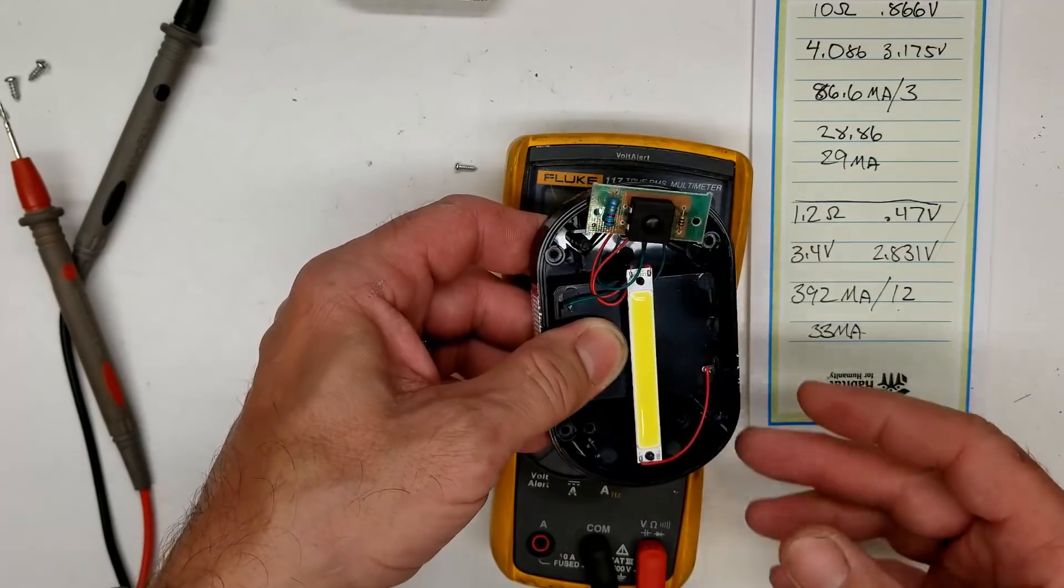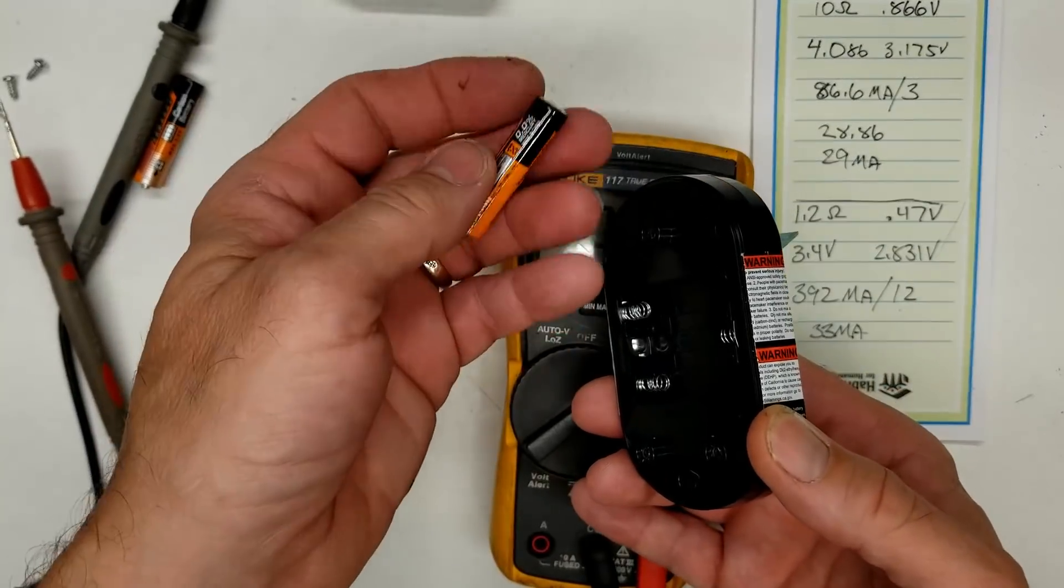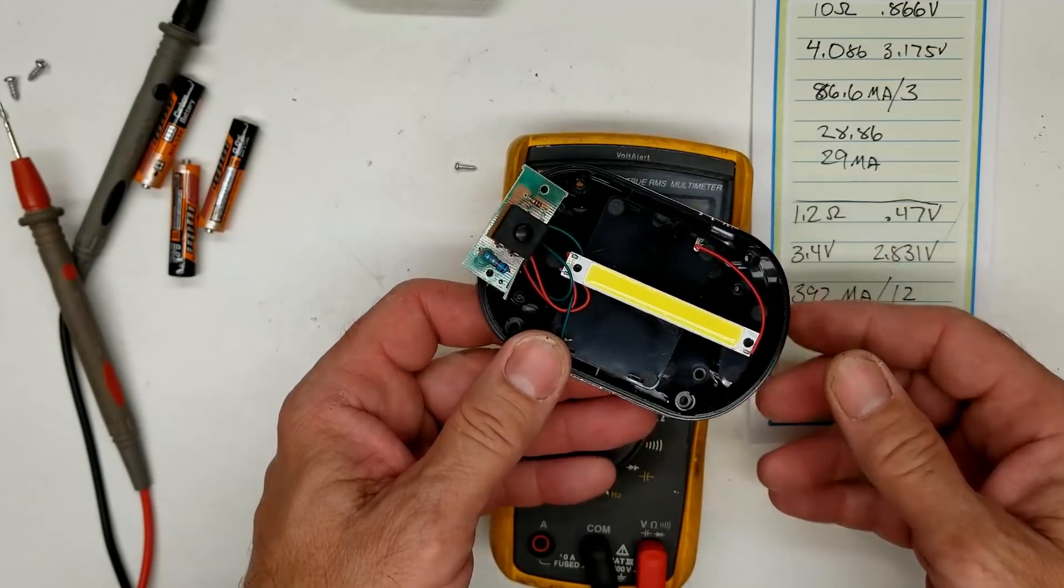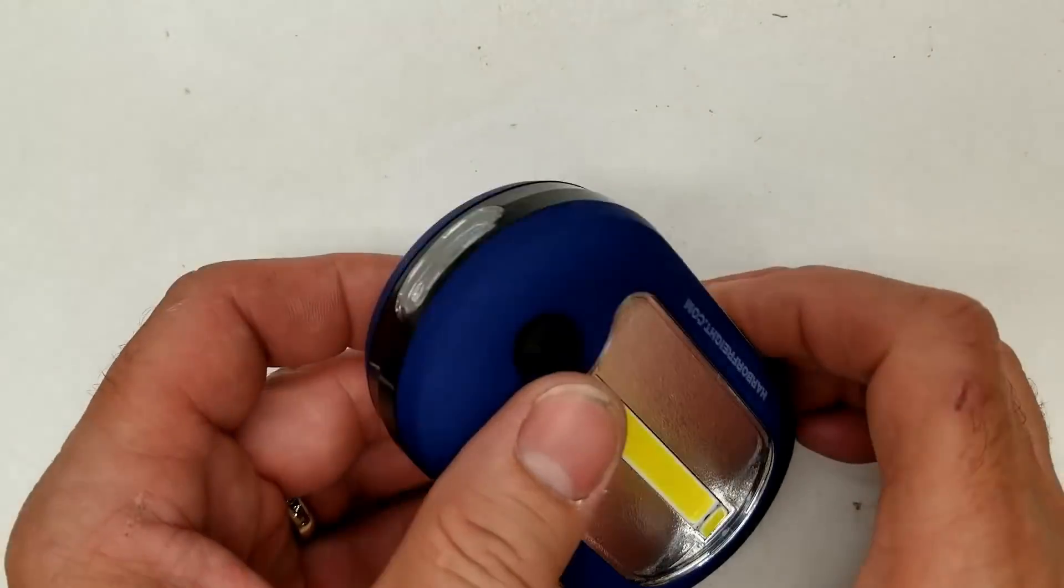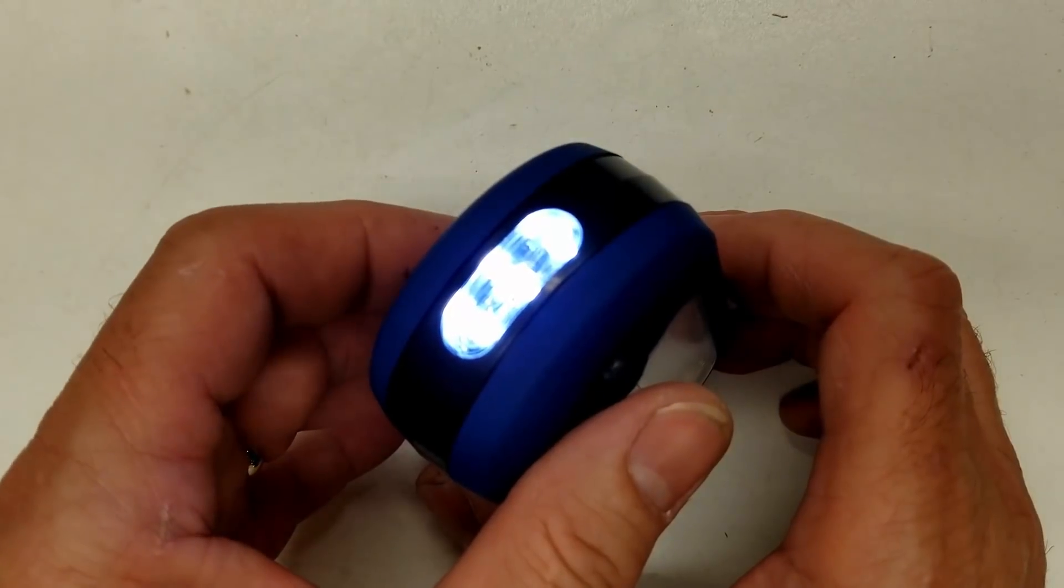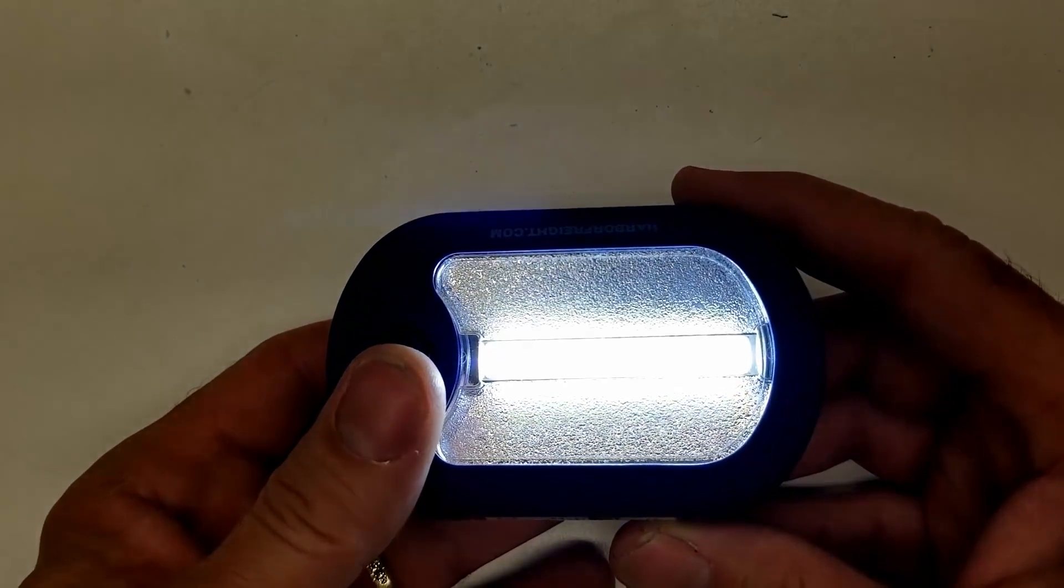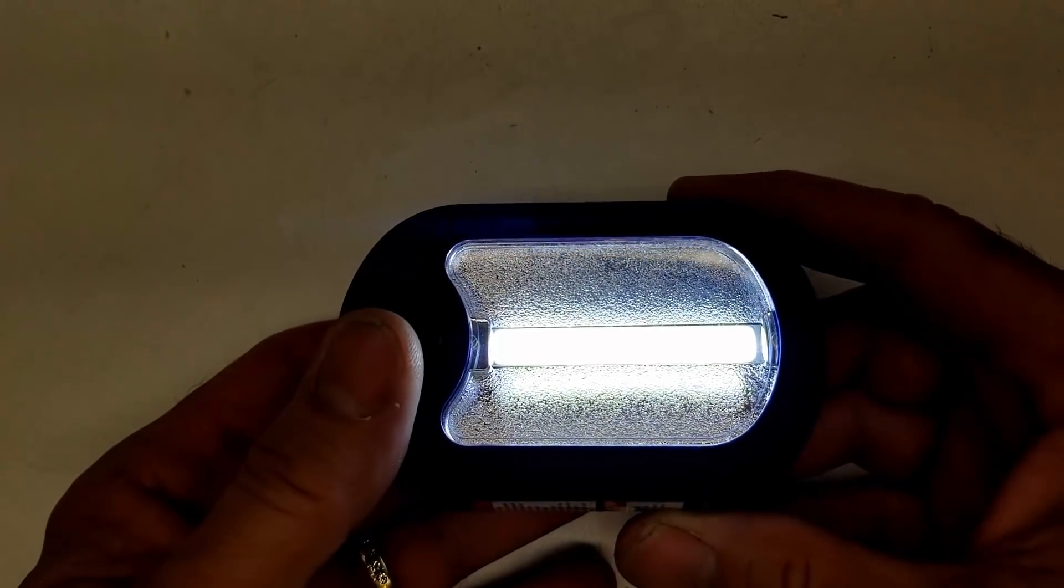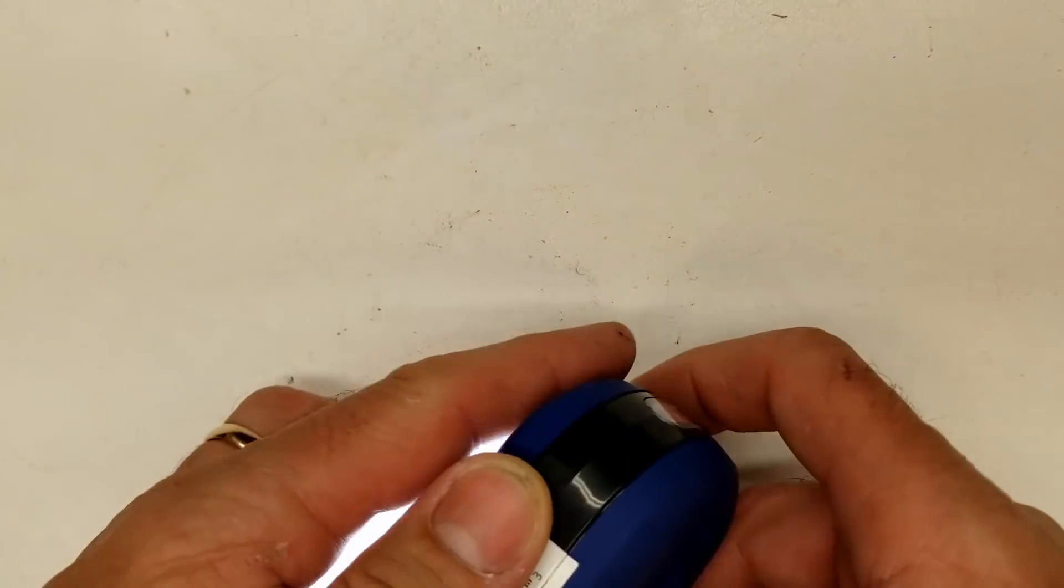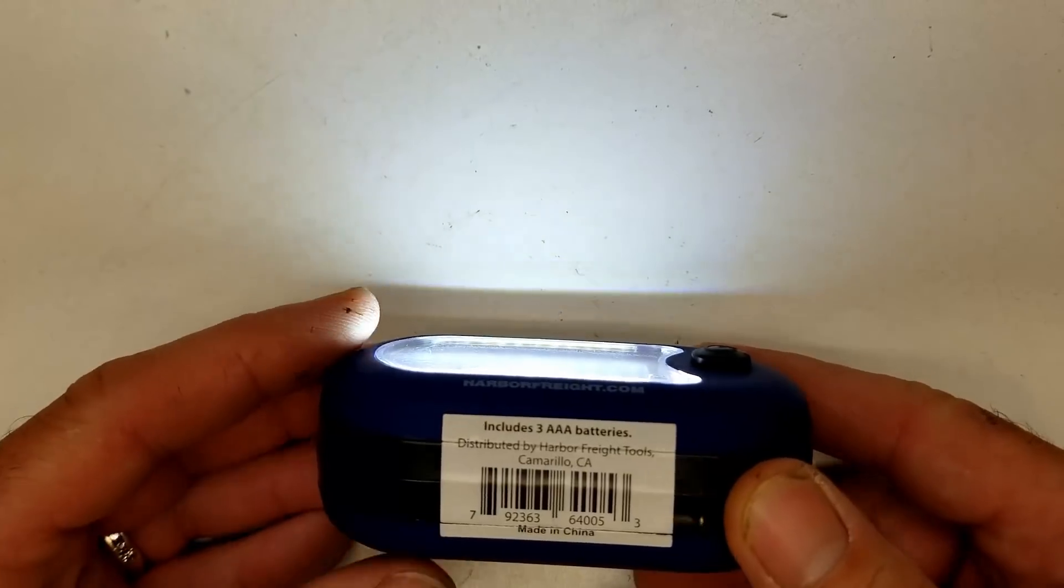But I'll tell you what, it was free. I've used it several times since then, even with the included Harbor Freight batteries, it does actually perform pretty well. Okay, well there it is all back together. We get the three LEDs in the front running at approximately 29 milliamps. We get the 12 LEDs on the flat side running at approximately 33 milliamps a piece.